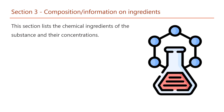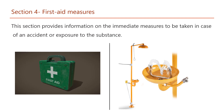Section 3 – Composition / Information on Ingredients: This section lists the chemical ingredients of the substance and their concentrations. Section 4 – First Aid Measures: This section provides information on the immediate measures to be taken in case of an accident or exposure to the substance.